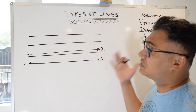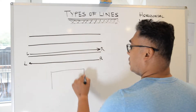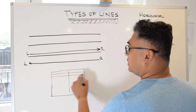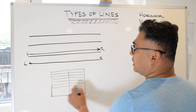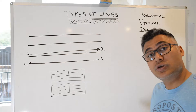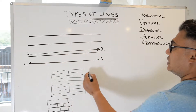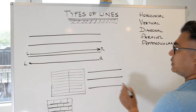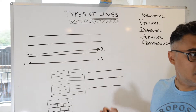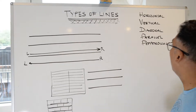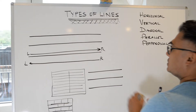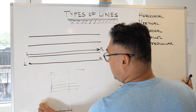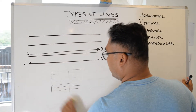Some examples of spaces where you may see horizontal lines: if you have a window with blinds, those blinds form horizontal lines. Horizontal lines basically run left to right, east to west. Those are horizontal lines. The next type of line we have in our list is vertical lines.